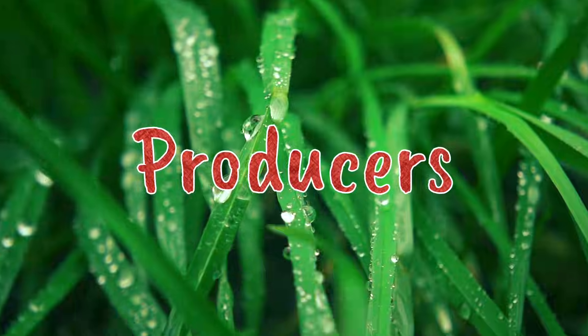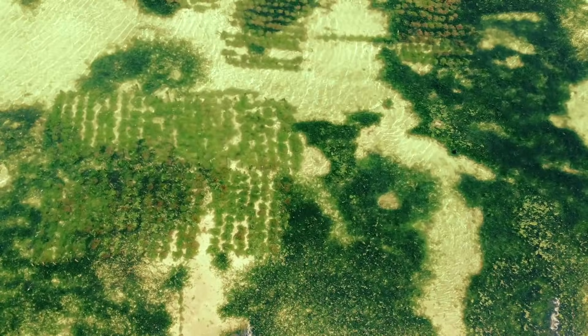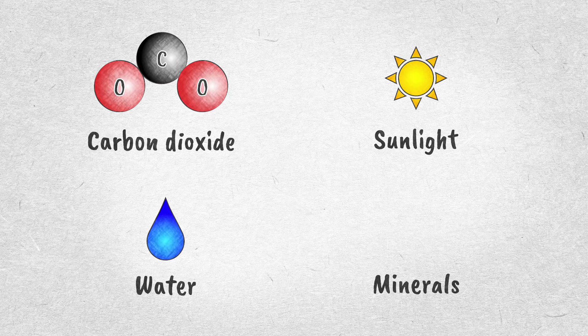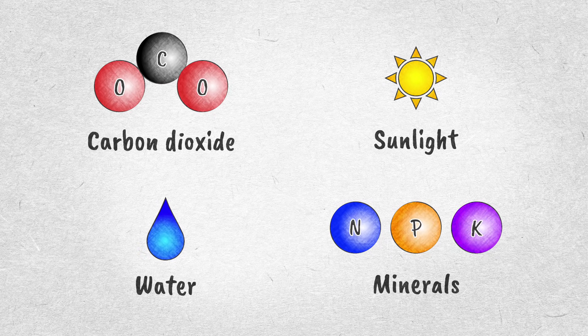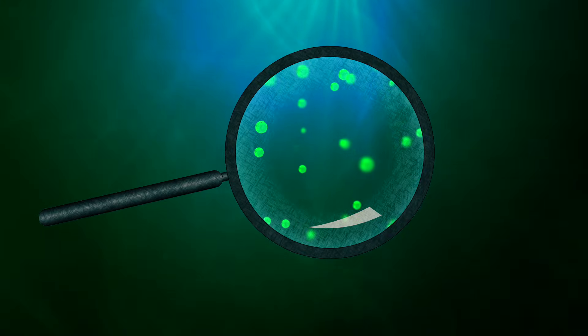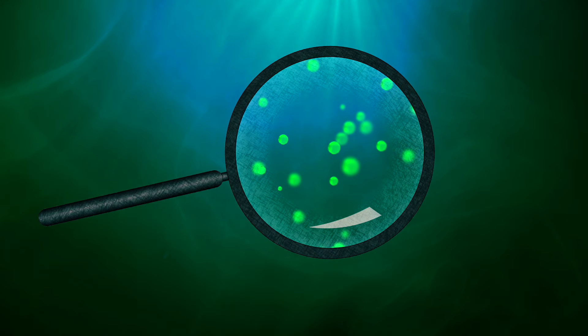To understand eutrophication, let's start with producers. By producers I mean plants, algae, any organism that carries out photosynthesis. Producers all need carbon dioxide, sunlight, water and minerals like nitrogen, phosphorus and potassium. Grass, trees, the crops we grow for food, even the tiny photosynthetic microorganisms that live in lakes and oceans need these things to survive.